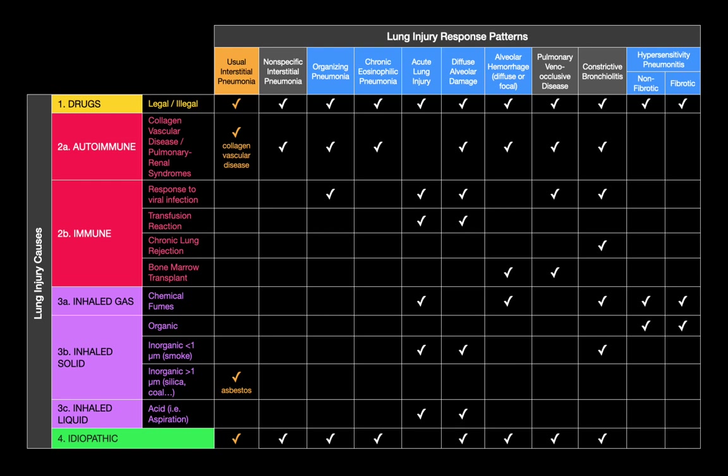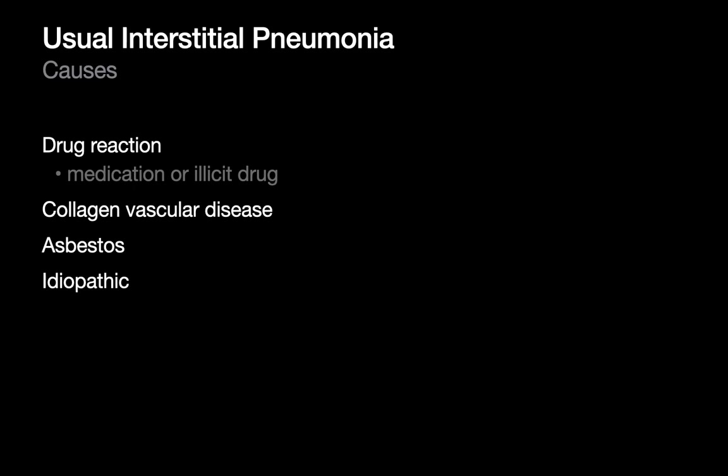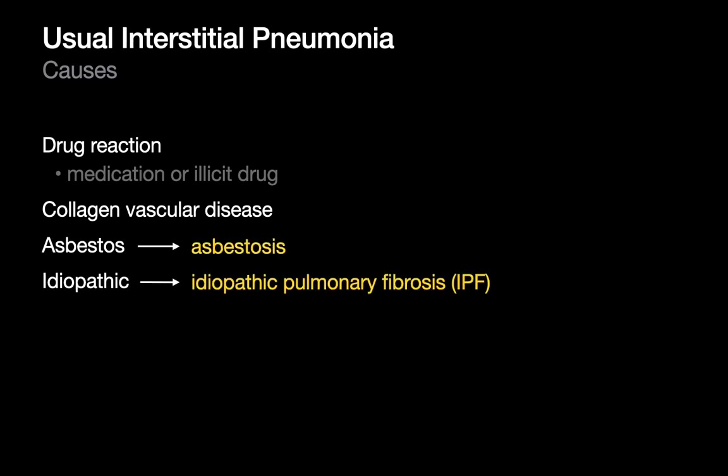The causes of UIP include drugs, autoimmune phenomena causing vascular disease, inhaled inorganic particles — specifically asbestos — and idiopathic cases. Asbestos-related UIP may be referred to as asbestosis. UIP that is idiopathic is commonly labeled idiopathic pulmonary fibrosis or IPF. The term pneumonia doesn't technically mean lung infection — it means lung inflammation. So usual interstitial pneumonia is not a lung infection; it is a lung inflammation.